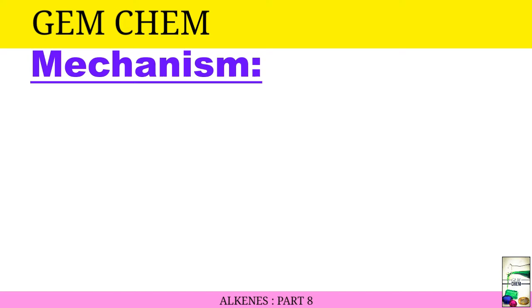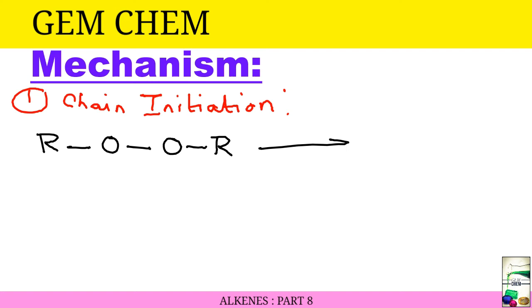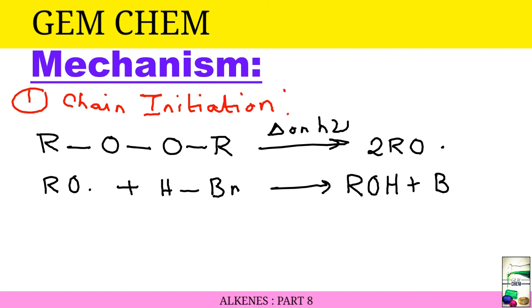We will see the mechanism. First is chain initiation. We have already seen for free radical mechanism: chain initiation, chain propagation, and chain termination. For chain initiation, we have a peroxide which, on being heated or provided by light, produces two RO·. Next, this RO· on reacting with HBr produces an alcohol ROH plus Br·. Now this Br· enters into the second stage, that is chain propagation.